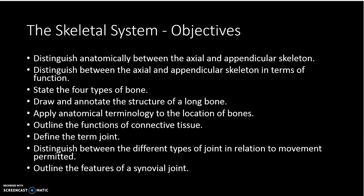For the IB course the objectives are pretty simple. We've got to distinguish anatomically between the axial and appendicular skeleton, distinguish between the axial and appendicular skeleton in terms of function, state the four types of bones, draw and annotate the structure of a long bone, apply anatomical terminology to the location of bones, outline the functions of connective tissue, define the term joint, and distinguish between the different types of joints in relation to movement permitted and outline the features of a synovial joint.